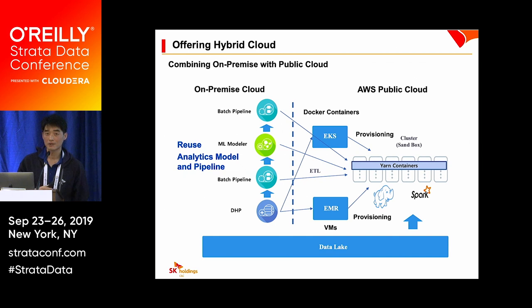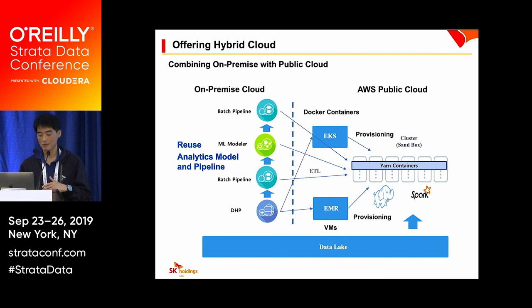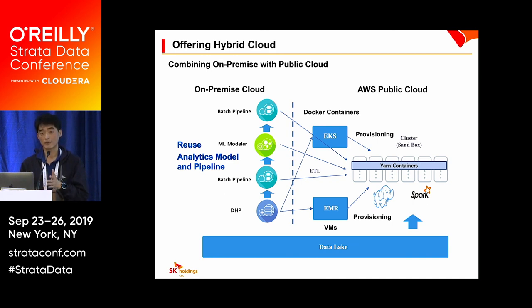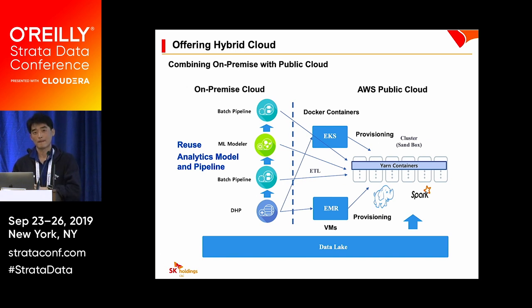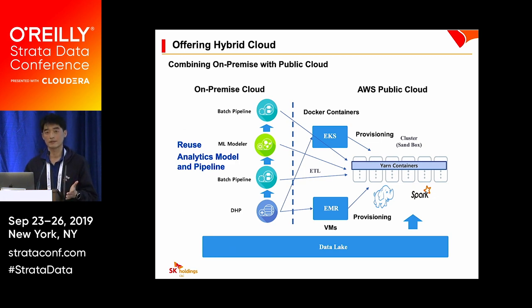We also offer hybrid cloud, combining on-premise with public cloud. Currently we have developed hybrid cloud with AWS. Customers can reuse analytics models and pipelines developed on-premise with AWS public services such as EKS for container provisioning and EMR for VMs. The key point is that DHP can create a cluster in AWS public cloud and cache the endpoints of Hadoop components into the shared cache, so other services such as BP, RP, and ML Modeler can use those endpoints for data processing and machine learning training.